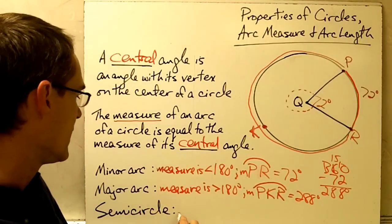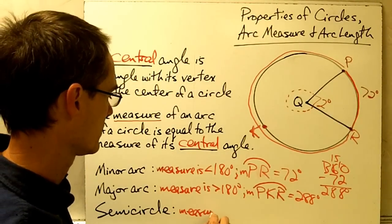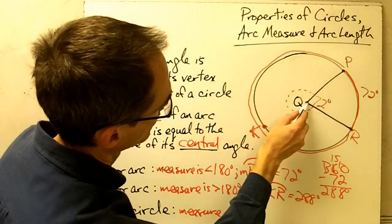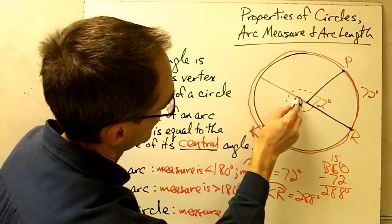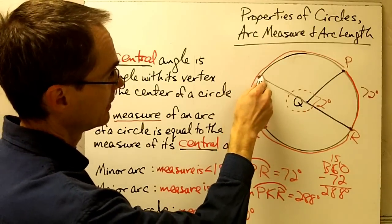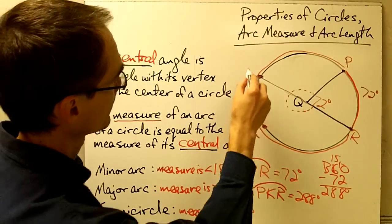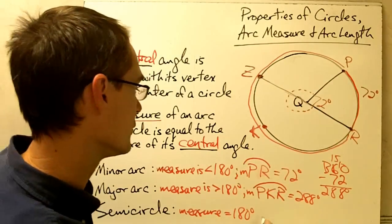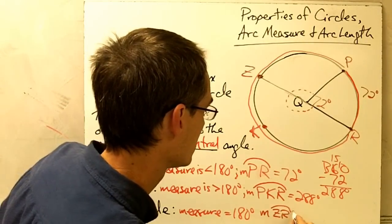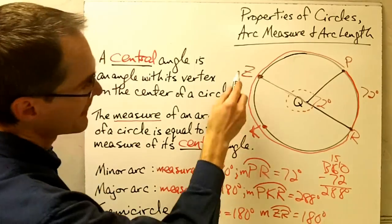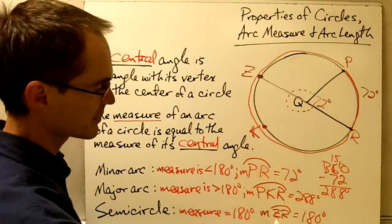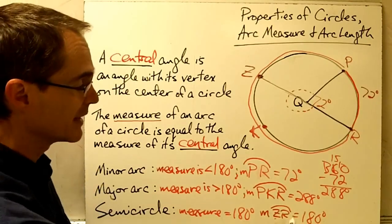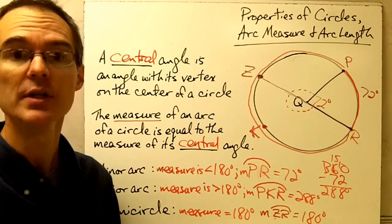A semicircle is just an arc whose measure is equal to 180 degrees. If I were to draw in a diameter of my circle and give that point a letter — how about Z — then the measure of arc ZR equals 180 degrees. For semicircles, sometimes they're labeled with two letters, sometimes with three letters. But any time you've got an arc whose measure is exactly 180 degrees, you know that's a semicircle.